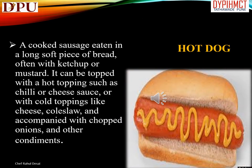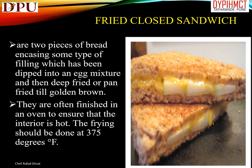Hot dog sandwich: a cooked sausage eaten in a long soft piece of bread, often with ketchup or mustard. It can be topped with hot toppings such as chili or cheese sauce, or cold toppings like coleslaw, accompanied with chopped onions and other condiments. Fried closed sandwiches are two pieces of bread encasing a filling, dipped into an egg mixture and then deep-fried or pan-fried until golden brown, often finished in an oven to ensure the interior is hot. Frying should be done at 375 degrees.